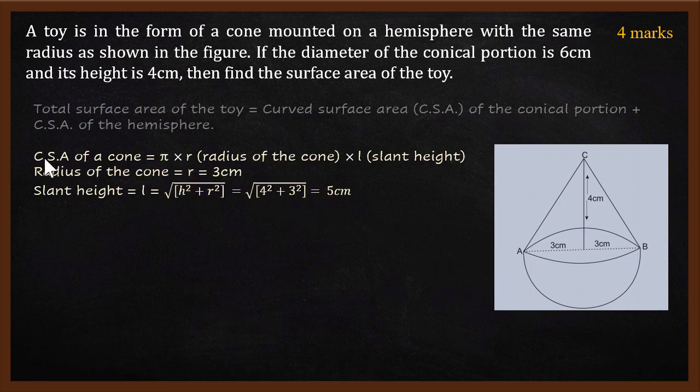What is the formula for curved surface area of a cone? Curved surface area of a cone is given by π times radius of the cone times slant height. You have to remember that curved surface area of the cone is πrL where L is the slant height. The radius of the cone is given as radius equals 3 cm.